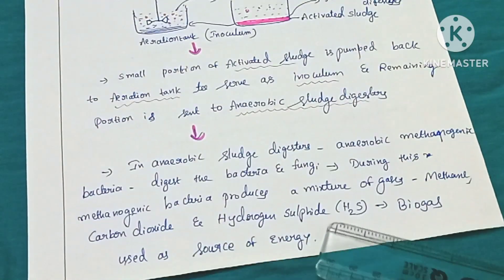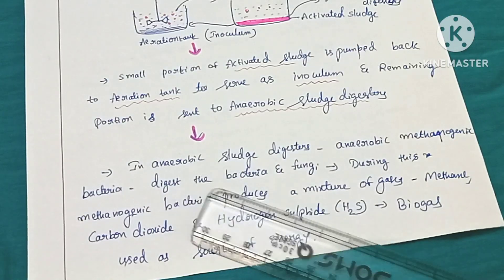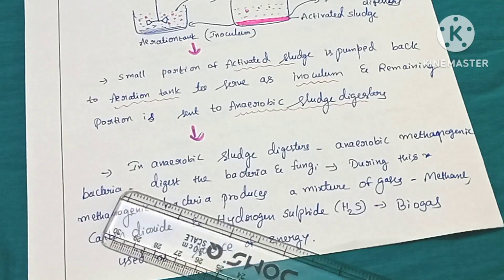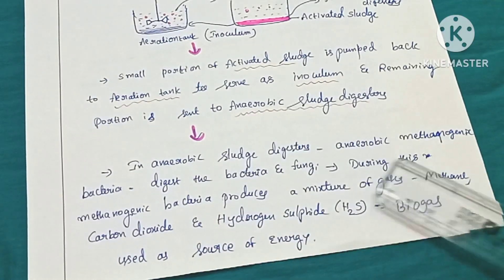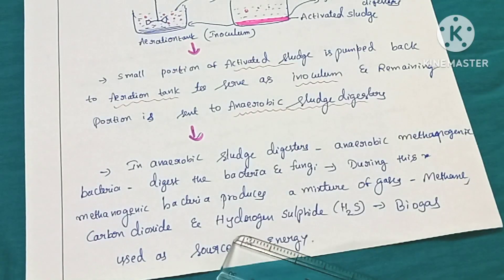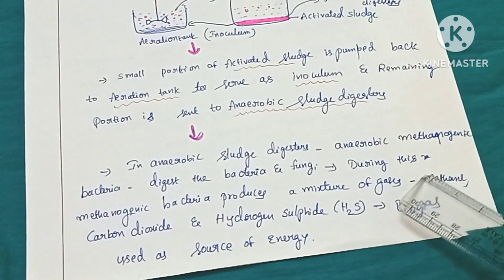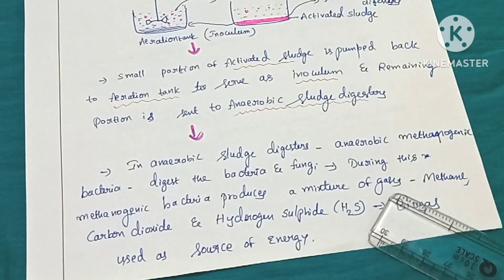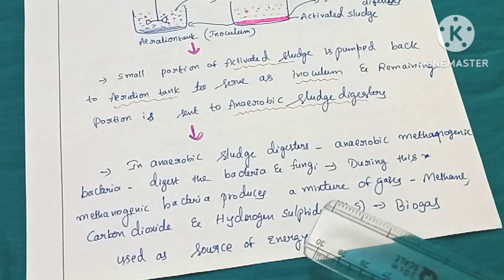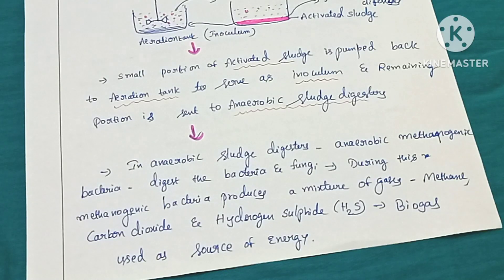In the anaerobic sludge digesters, anaerobic methanogenic bacteria are present. These bacteria digest the bacteria and fungi present in the sludge. During this digestion process, gases are released. The methanogenic bacteria produce a mixture of gases — methane, carbon dioxide, and hydrogen sulfide — collectively called biogas. The major component of biogas is methane. This biogas is used as a source of energy; it is inflammable and used for cooking and lighting purposes.